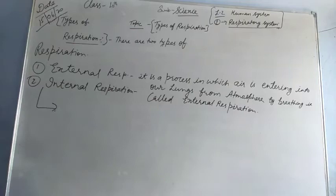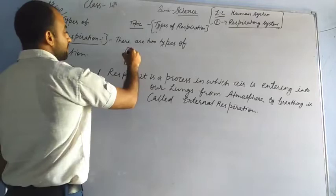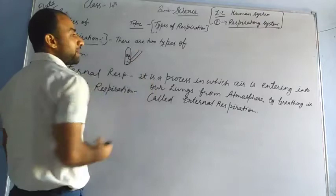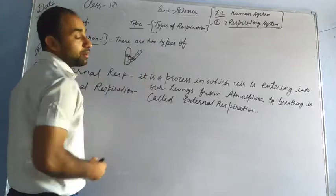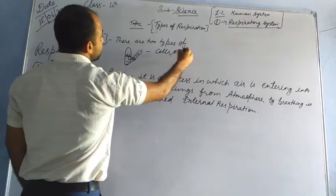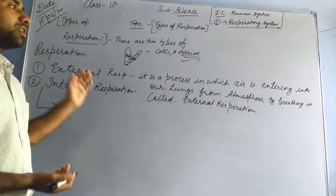The second one is internal respiration. What is internal respiration? Inside our lungs there are so many blood capillaries in which blood is flowing. The air is diffused and absorbed there, reaching to the cells and tissues. That kind of respiration is called internal respiration.